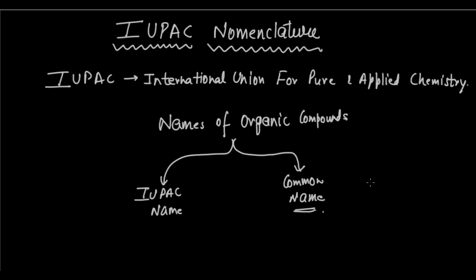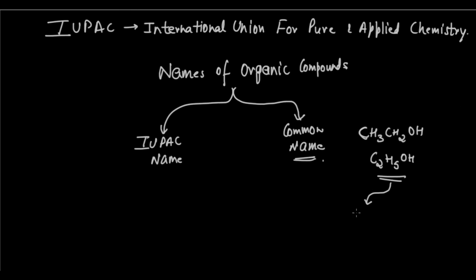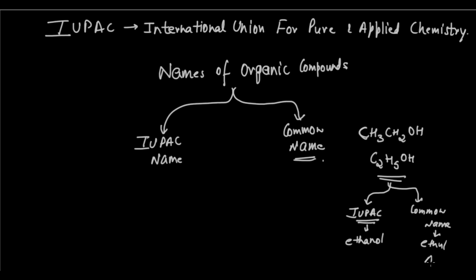For example, ethanol, which has the formula CH3CH2OH, or C2H5OH — this is an alcohol with two carbon atoms. Its IUPAC name is ethanol. But its common name is based on its source, and it is called ethyl alcohol. So you can see the difference — here it's ethanol, here it's ethyl alcohol. They refer to the same compound but have different names.